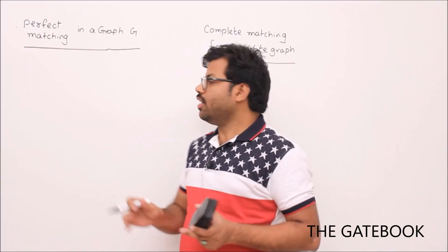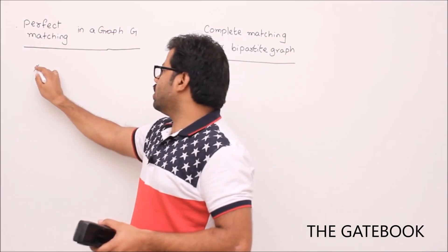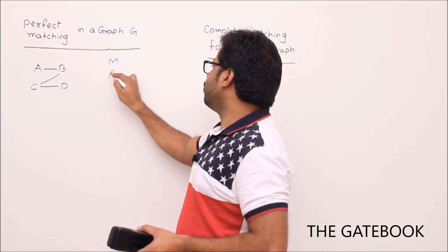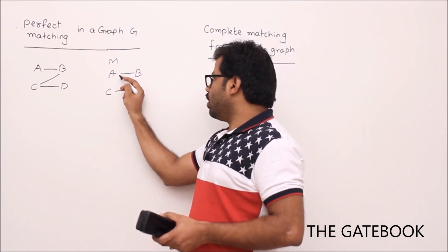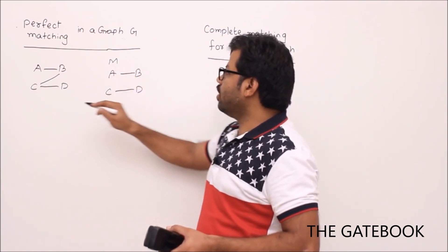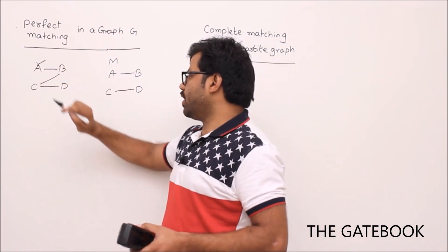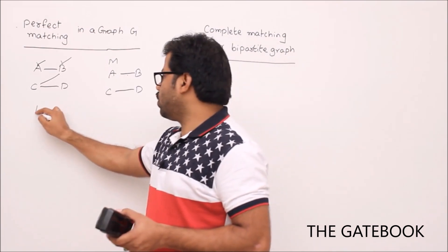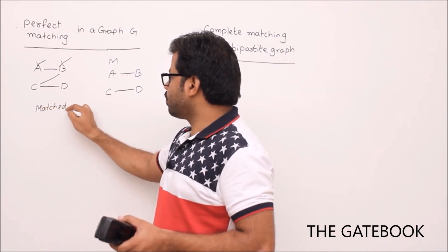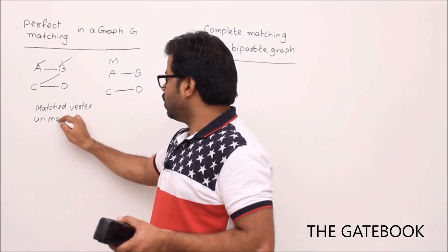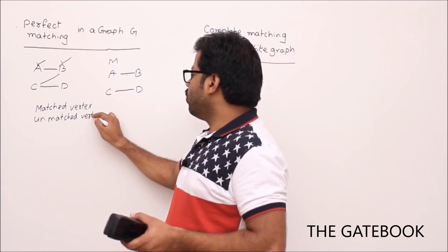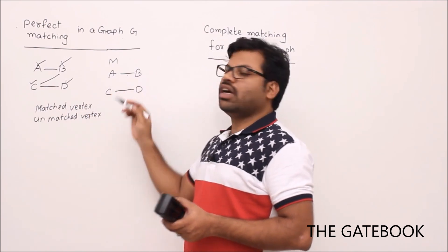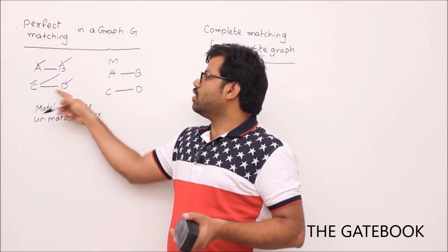Let's talk about perfect matching in a graph. Consider this graph: a-b, b-c, c-d. Now consider the matching which is a-b and c-d. Whenever a vertex gets an edge in a matching, we mark it and call it a matched vertex. With respect to this matching, every vertex is matched.